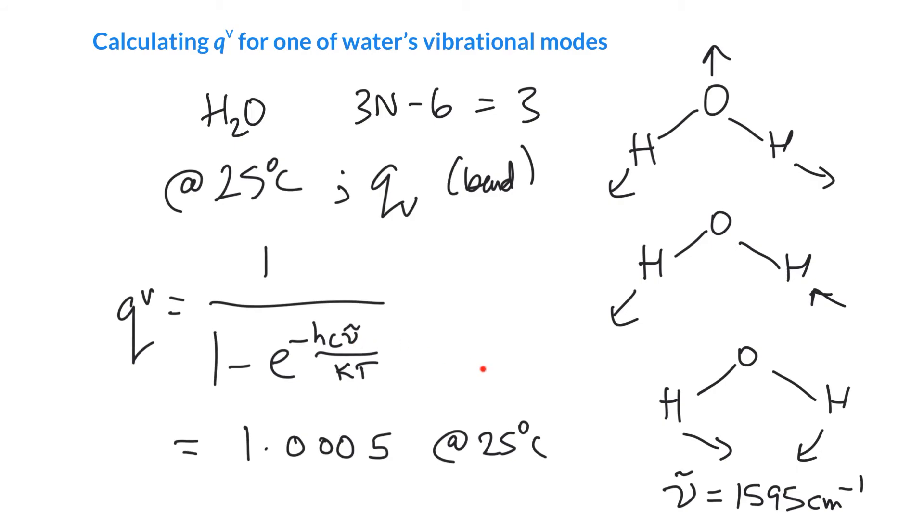And if we plug in the values here, I get 1.0005 at 25 degrees C. So if you plug in everything you need, if you plug in 1595, 3 times 10 to the 10 centimeters per second, Planck's constant, you name it, 298 Kelvin there, you get 1.0005. So that's really insane. So what is that telling us?